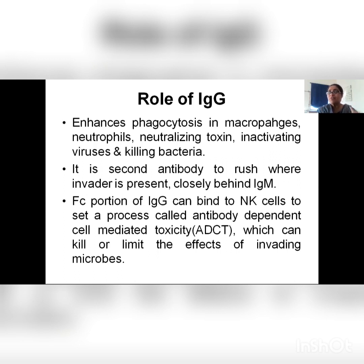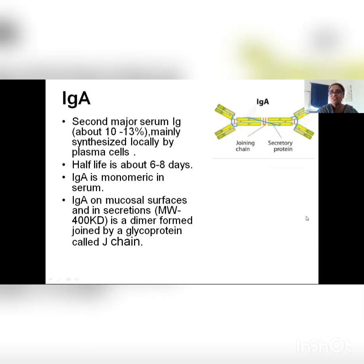The FC portion of IgG is very important: the constant portion of IgG can bind to natural killer cells. NK cells are natural killer cells that are going to destroy all cells which are unnatural in the body. This antibody will bind to natural killer cells and initiate a process called antibody-dependent cell-mediated cytotoxicity, ADCT, which can kill or limit the effects of invading microbes. ADCT is initiated by IgG.